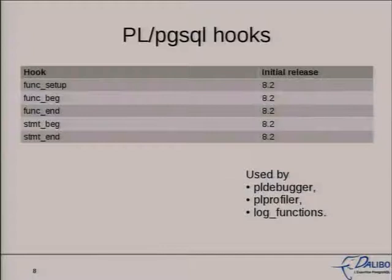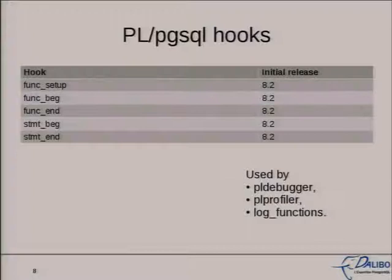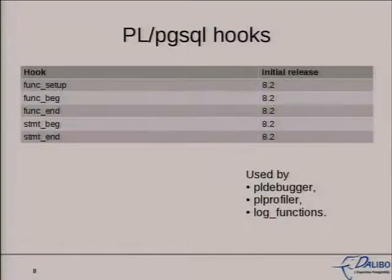For PL/pgSQL, you have five hooks available. You have the hook called when you enter the declare section of a PL/pgSQL function. You have the func_beg hook, which is called when you start executing the begin of a function. func_end for the end of the function. stmt_beg for the beginning of a statement. And stmt_end for the end of a statement. It's used by three modules as far as I know: the debugger, the profiler provided by EnterpriseDB, and another tool I wrote called log_functions.